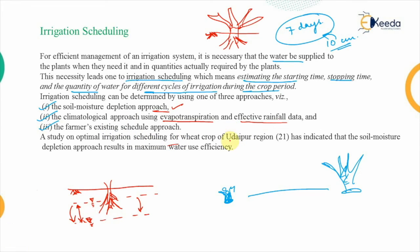When all three techniques were studied, the Udaipur region of Rajasthan was analyzed for the wheat crop, and it was indicated that the soil moisture depletion approach results in maximum water use efficiency. That completes irrigation scheduling and all topics related to conventional methods of irrigation. In the next video we will look at the delta cycle factor and other related topics. Thank you.